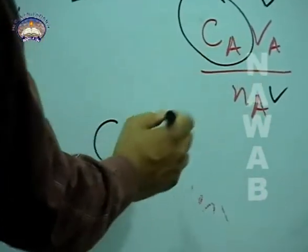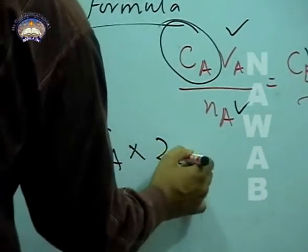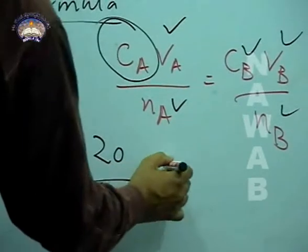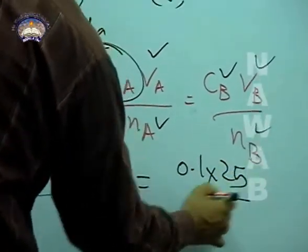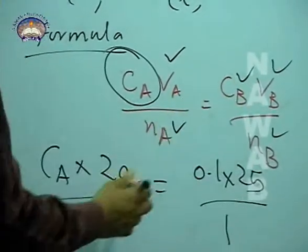Now put all the values. Volume of acid was given 20, number of mole 1, concentration 0.1, volume 25, number of moles 1.